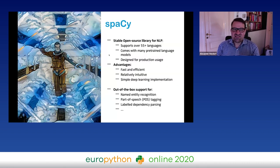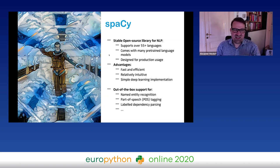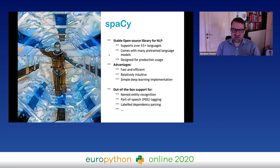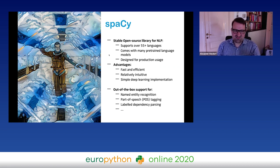spaCy is a stable open source library. It supports nowadays more than 55 languages and comes with many pre-trained language models, so you have a solid starting ground for NLP tasks. It's designed for production usage. The key advantages are it's fast, intuitive, and has great documentation — there are examples and very good explanations for everything on the spaCy website. It also supports deep learning implementations out of the box, including named entity recognition, part-of-speech tagging, and dependency parsing.